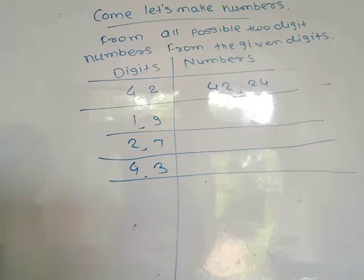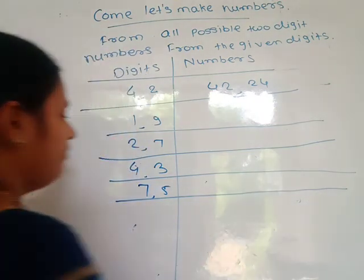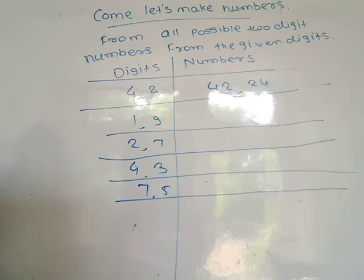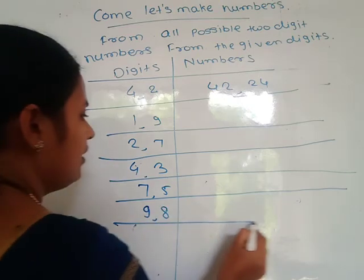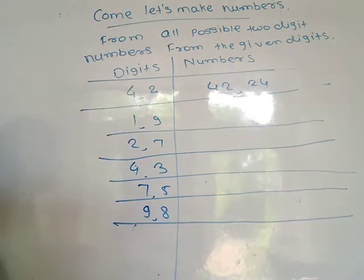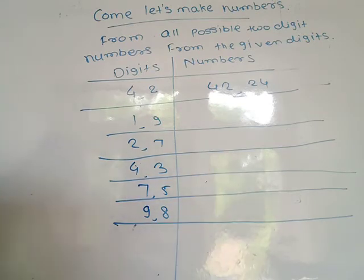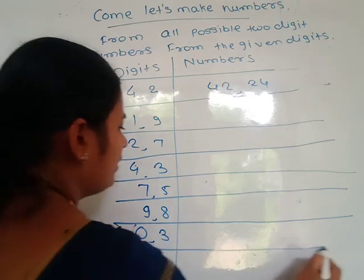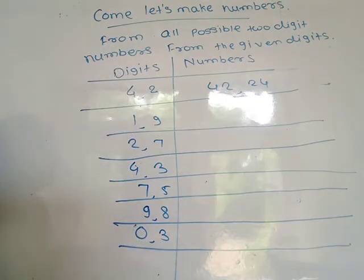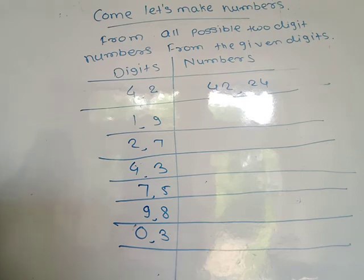Then digits 7 and 5 — you write 75 and 57. Next, digits 9 and 8 — you write two numbers: 98 and 89. Then digits 0 and 3 — you write only one number: 30, because 0 has no value as a leading digit.